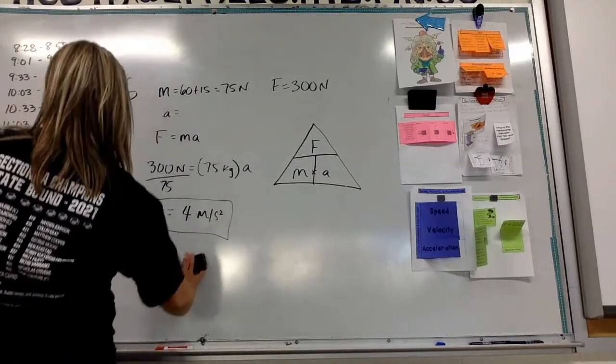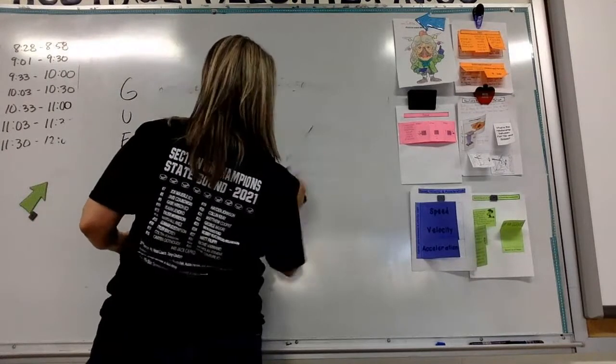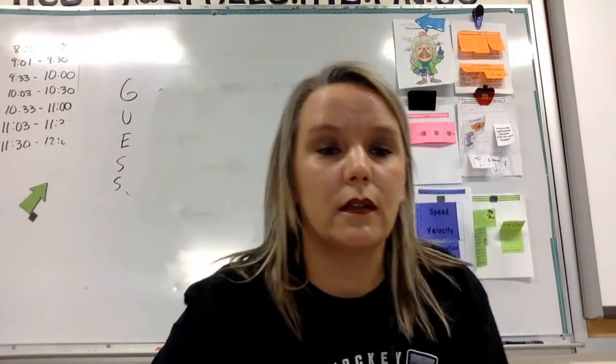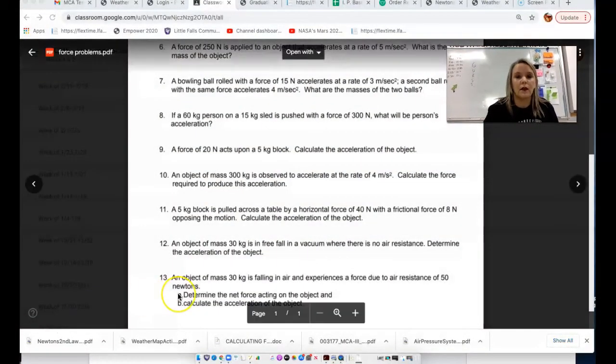Next one, number 13, is a little bit more difficult. Erase this one. Go back to the problem. Okay, it says an object of mass of 30 kilograms is falling in air. Well, if it's falling in air, it has the acceleration of gravity working on it.